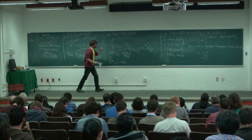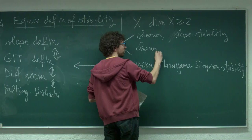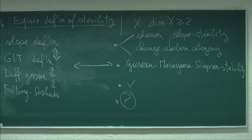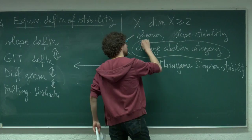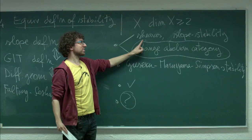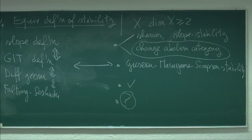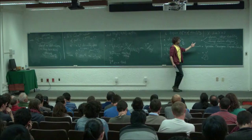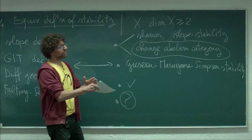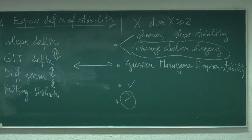The key idea is that instead of looking at sheaves, I change the abelian category but keep the same definition of stability. This notion of stability is interesting because in a certain limit it recovers the usual Giesecker stability, and at some walls in a chamber structure it recovers slope stability — it's something in between the two. The bad thing is that we lose sheaves and all local arguments, but the thing we gain, especially in dimension ≥ 2, is the ability to vary stability.